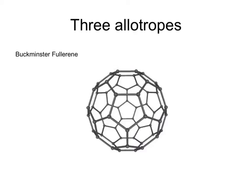Buckminsterfullerene, however, is not a giant structure. It's made of small molecules of 60 carbon atoms in a ball.